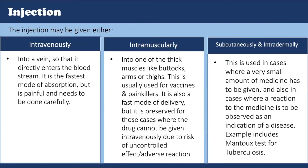A subcutaneous injection is administered as a bolus into the subcutis. The layer of skin directly below the epidermis and the dermis is collectively referred to as the cutis. This is used in cases where a very small amount of the medicine has to be given. Subcutaneous injections are highly effective in administering medications such as insulin, morphine and diacetylmorphine.